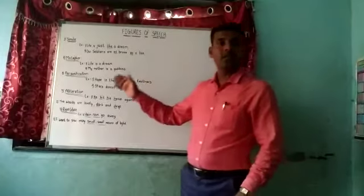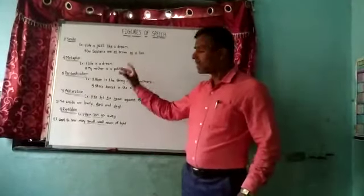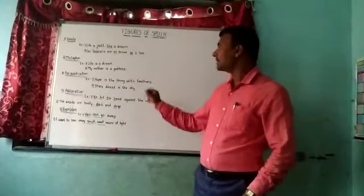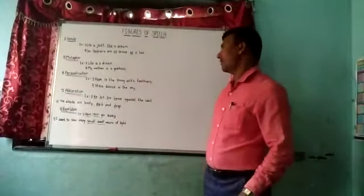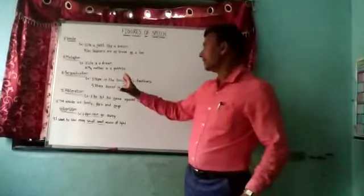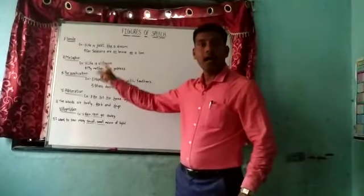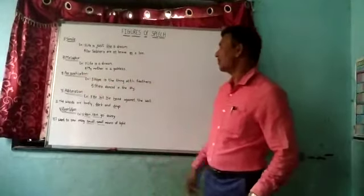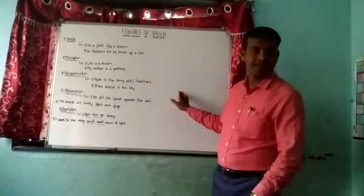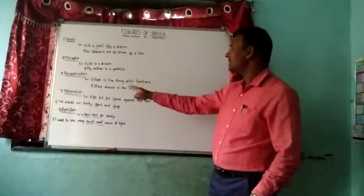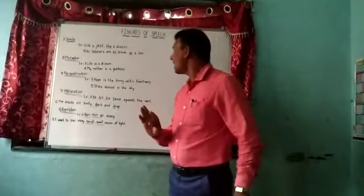The third type is called personification. In Marathi we can call it chetana gunokti alankar. When in a sentence we refer to inanimate objects, ideas, or emotions as living things, that is the use of personification. Important examples of personification: 'Hope is the thing with the feathers' and 'Stars dance in the sky.'